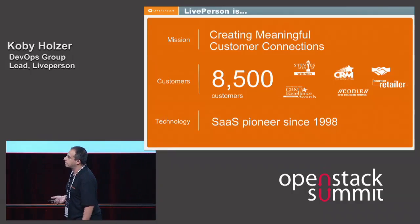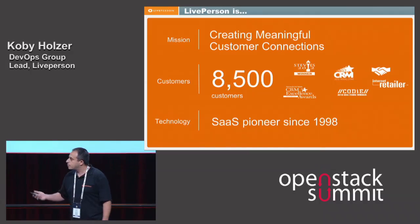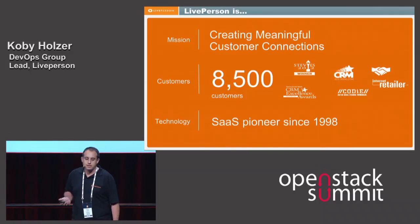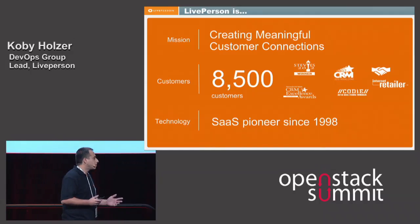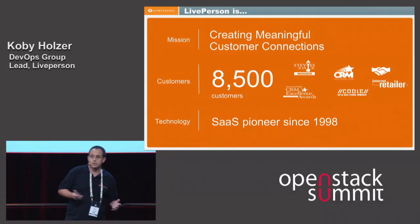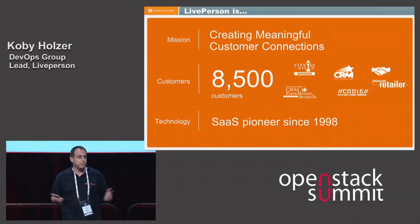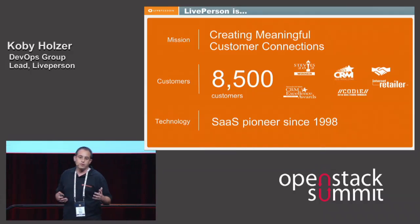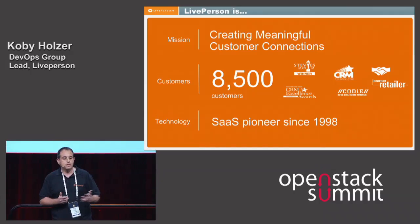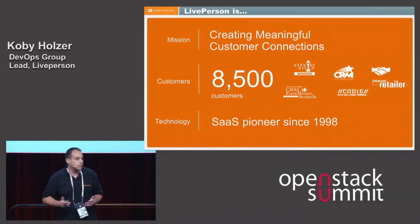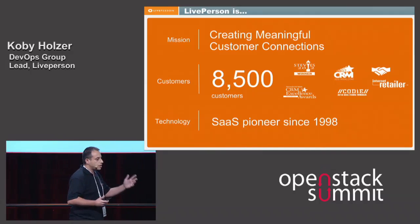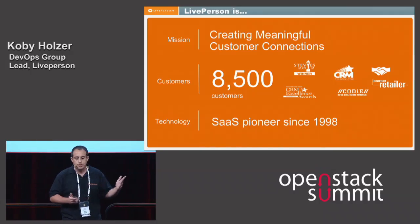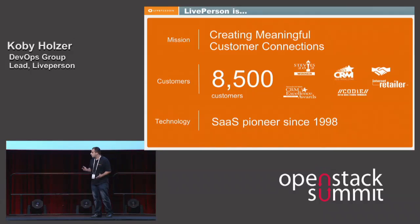So, LivePerson. LivePerson has been around since 1998 — a SaaS company even before that word was invented; I think it was called ASP back then. We have 8,500 customers, 8 out of 10 Fortune 500, and our mission statement is to create meaningful customer connections through our rich multimedia platform, which I'm going to show you an example of in the next slide.